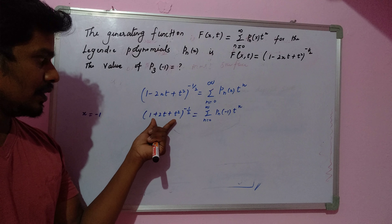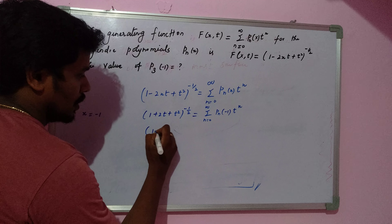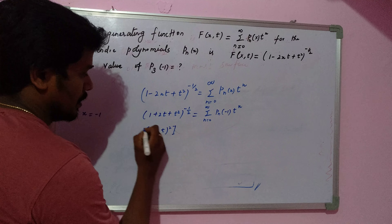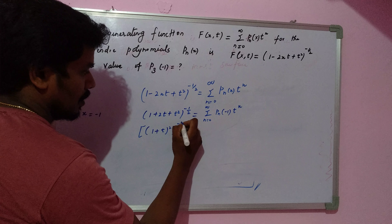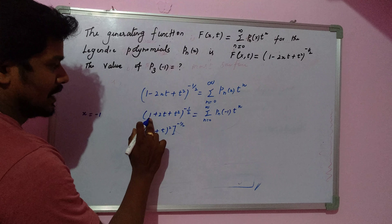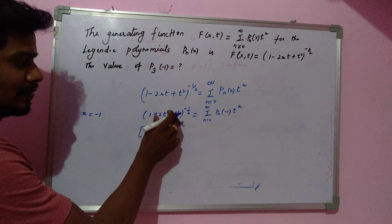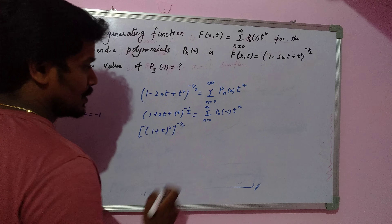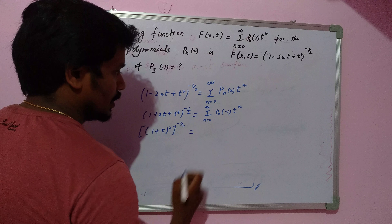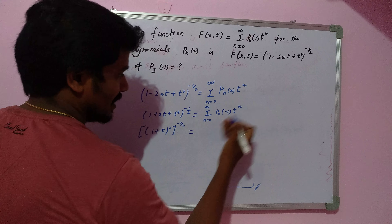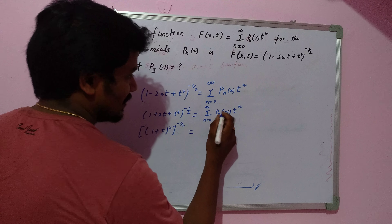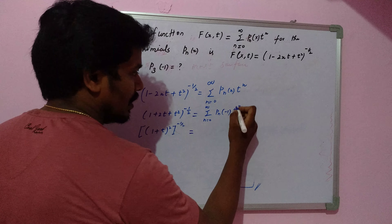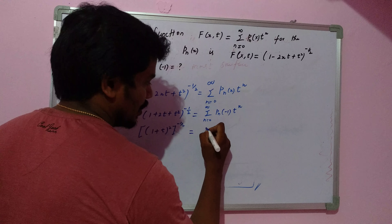We can recognize the expression as (1 plus t) whole squared to the power minus one-half, using the identity (a plus b) whole squared equals a² plus 2ab plus b². So the left-hand side simplifies. We need P₃(-1), so we can focus on the relevant terms and expand a little bit.